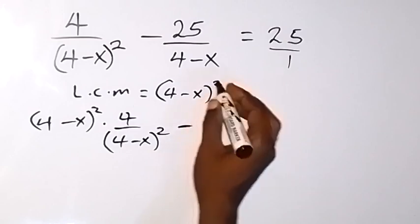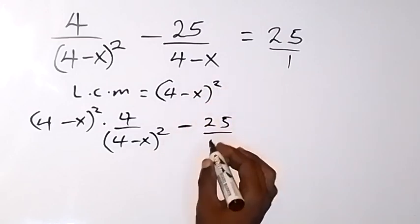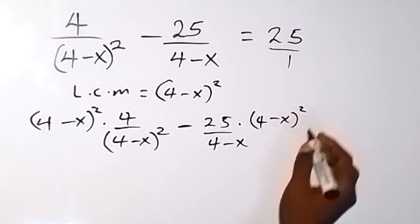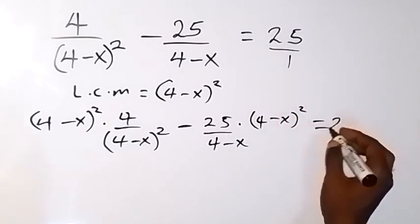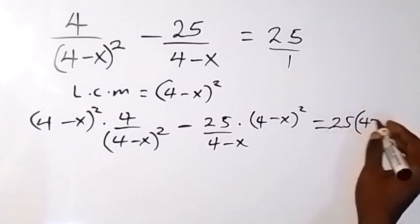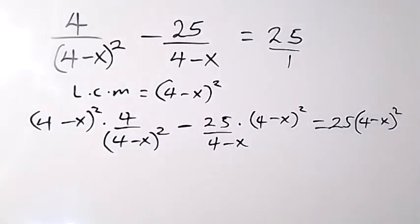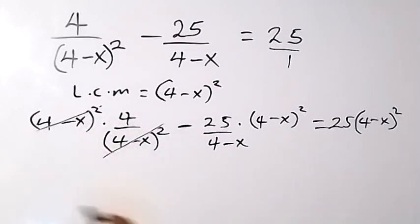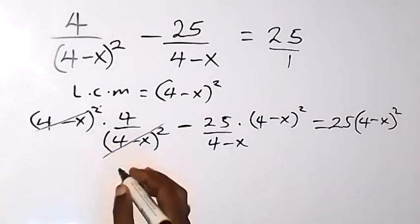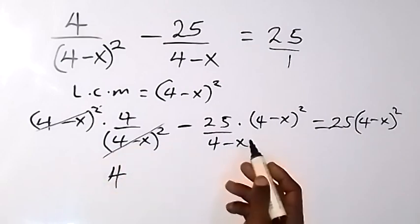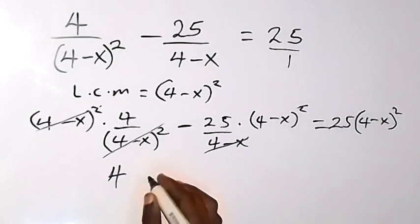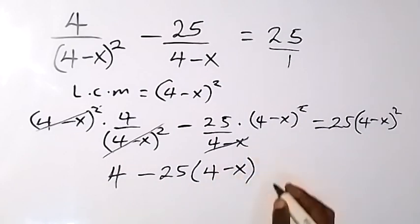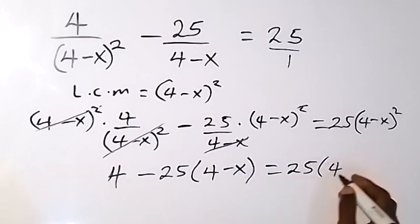Then minus on this side we multiply as well — that's 25, we have 4 minus x, then times 4 minus x squared. On the right-hand side we multiply: that's 25 times 4 minus x squared. From there, 4 minus x squared cancels, leaving 4 on this side. Then one 4 minus x cancels one 4 minus x, so we are left with 25 into bracket 4 minus x, then equals to 25 times 4 minus x squared.